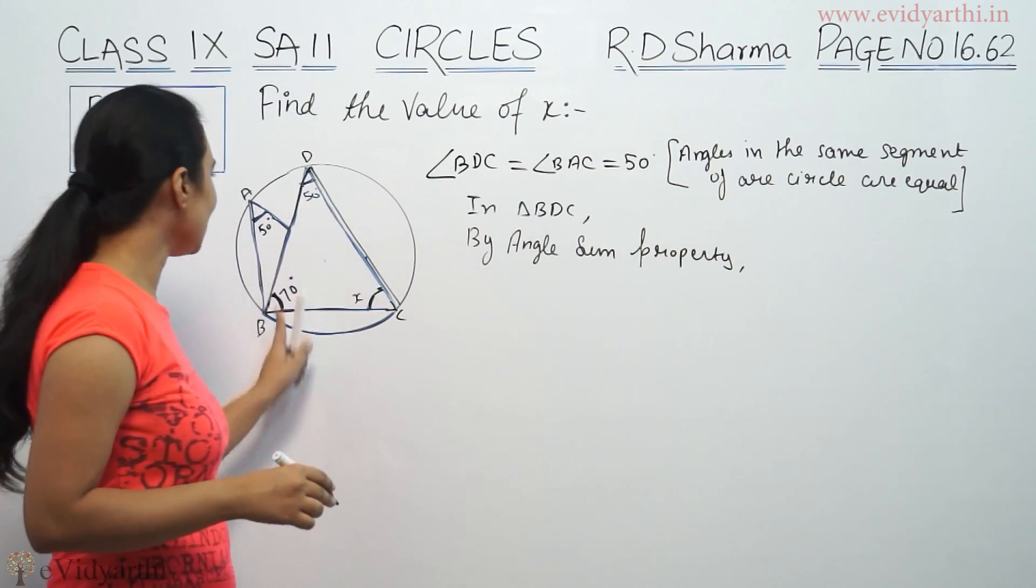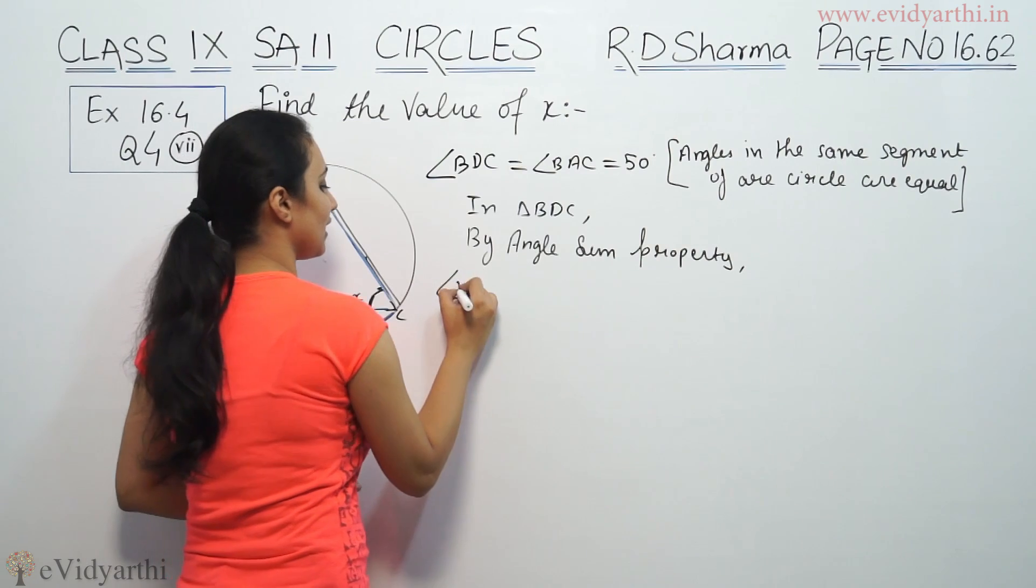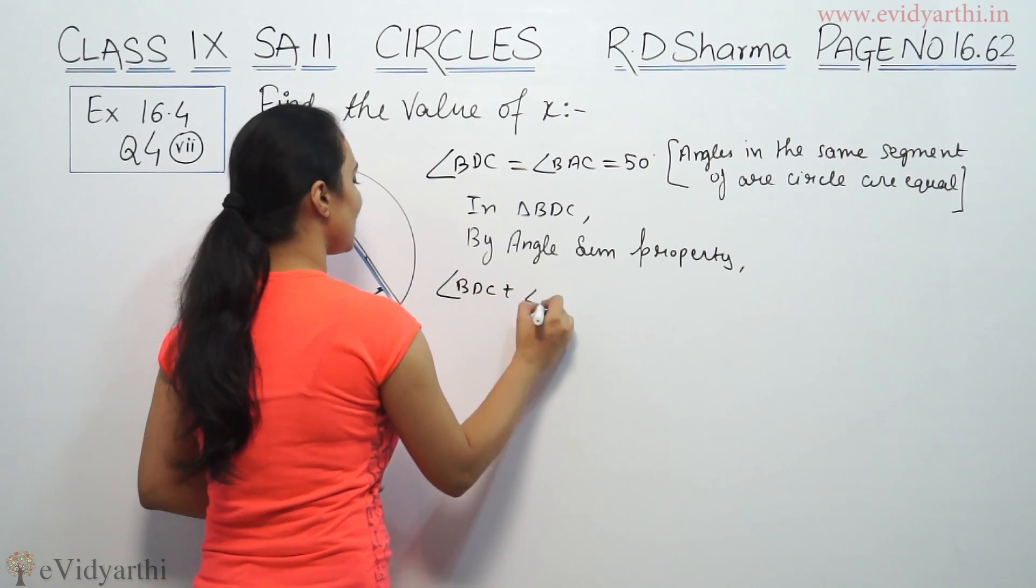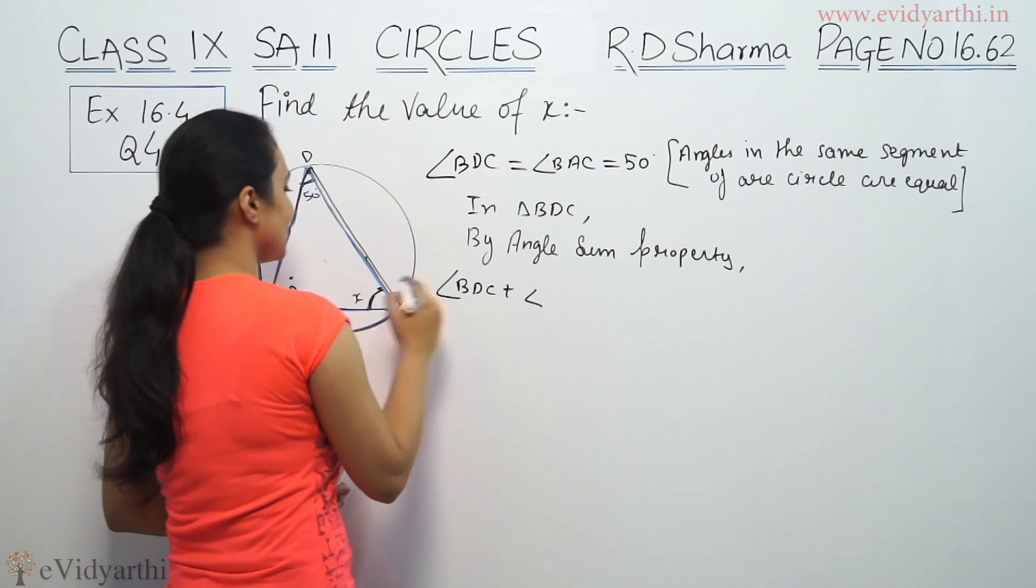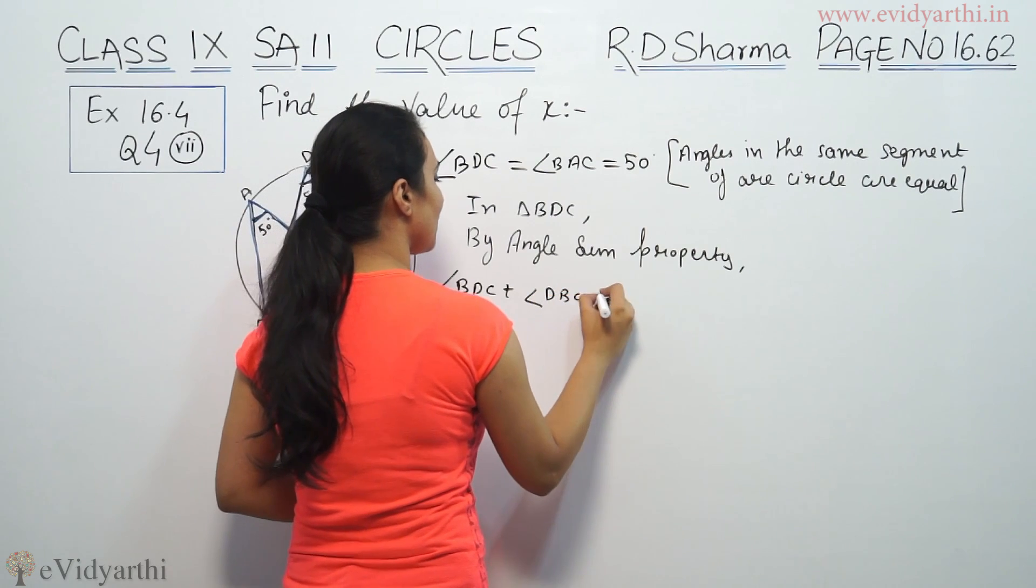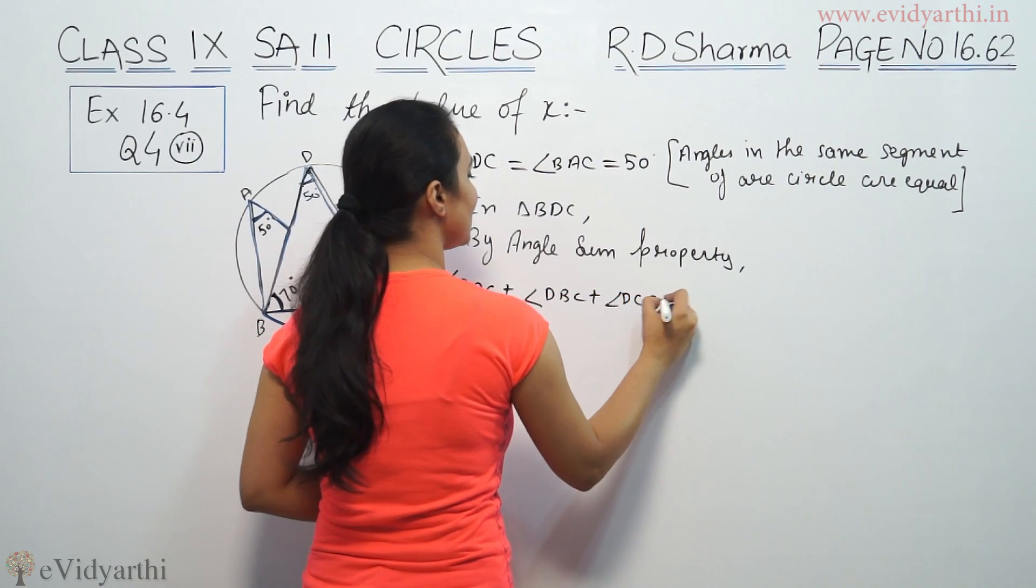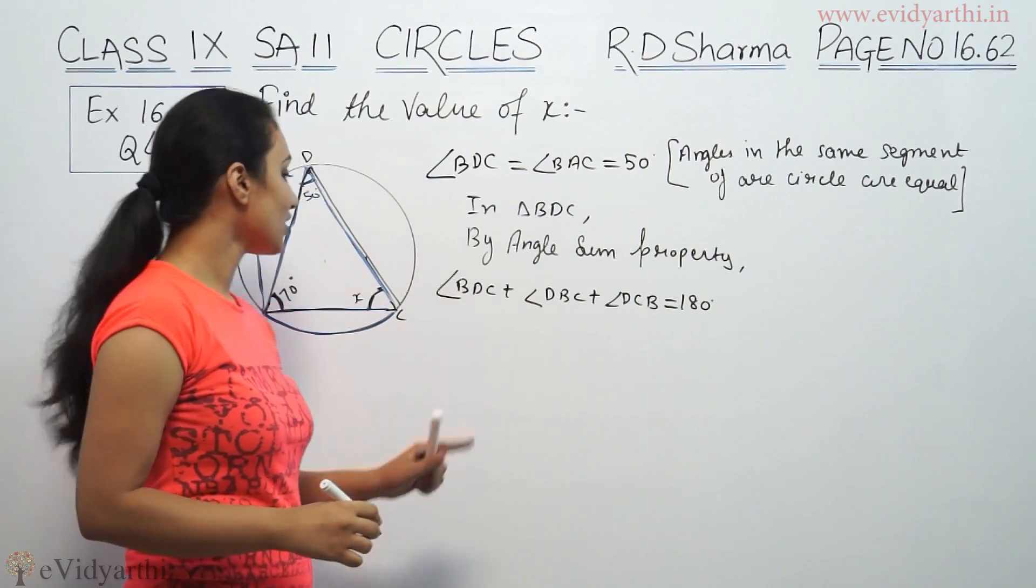So in triangle BDC, angle DBC plus angle BDC plus angle DCB is equal to 180 degrees.